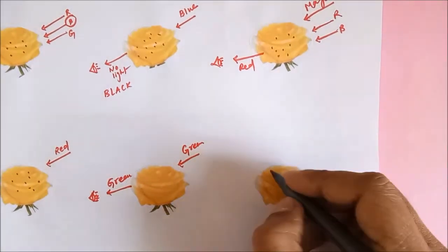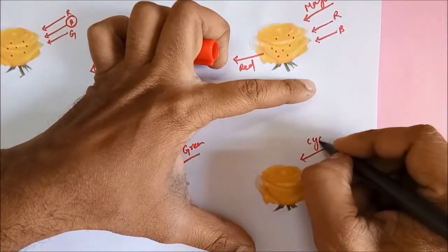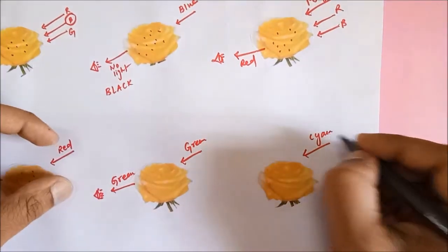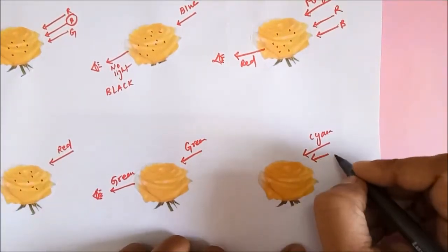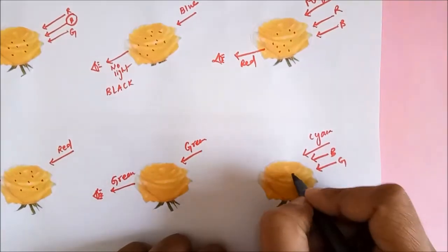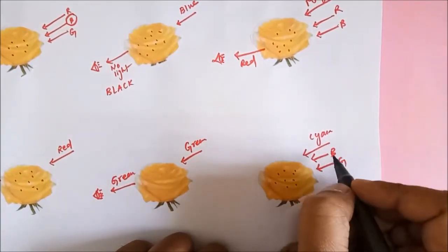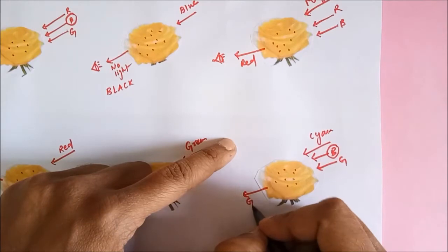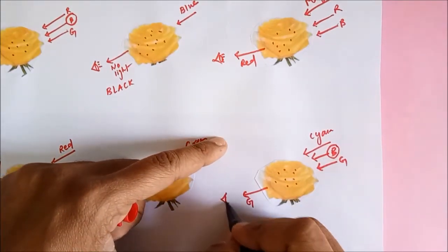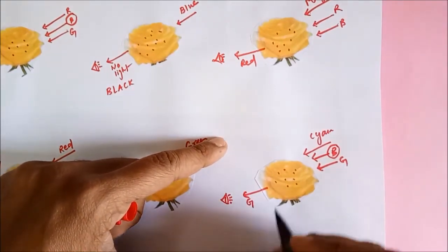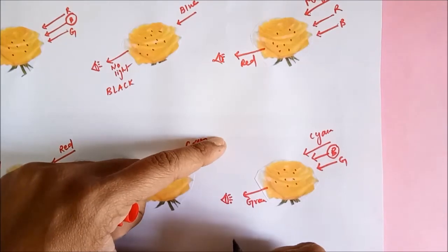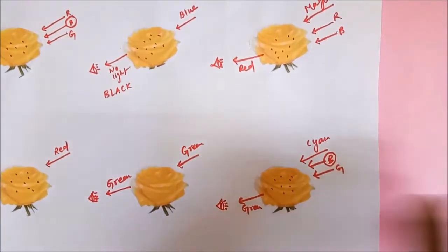Now let's impart cyan light on it. Cyan is made up of blue and green, so we can consider cyan light to be made up of blue and green. As discussed, the pigments are going to absorb blue color, so blue gets absorbed. Green color will be in the reflected light, finally reaching our eye, and we perceive the yellow rose as green in cyan light.